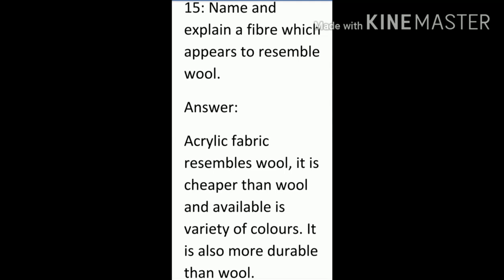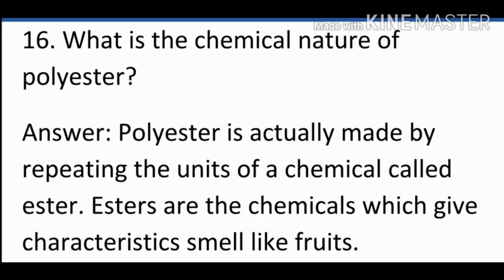Question 16: What is the chemical nature of polyester? Polyester is made by repeating units of a chemical called ester — that is the monomer unit. Esters are chemicals which give a characteristic pleasant smell like fruits. These monomers combine together to form polymers, that is polyesters.